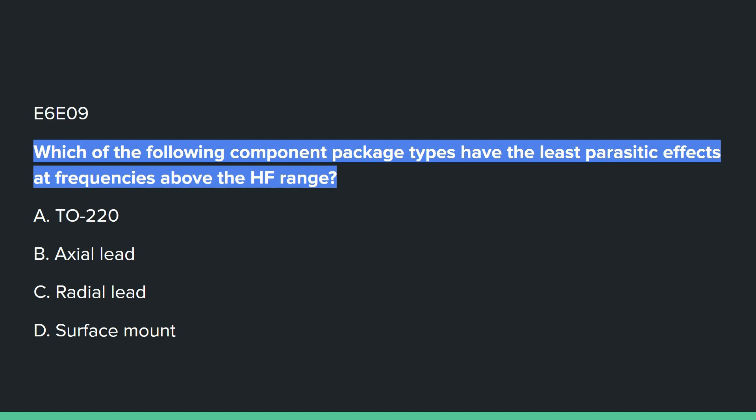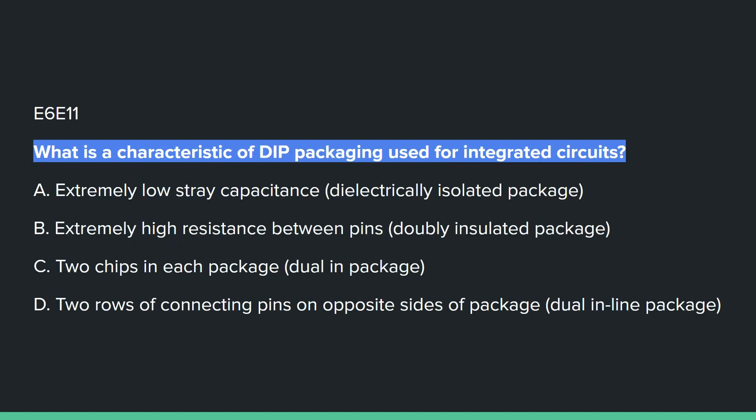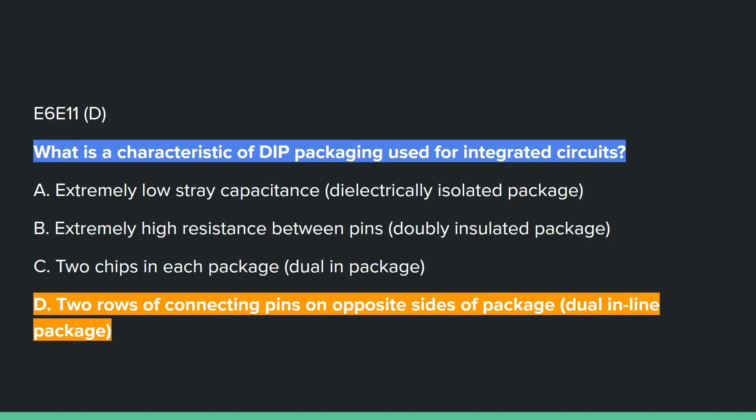E6E09: Which of the following component package types have the least parasitic effects at frequencies above the HF range? D, surface mount. E6E10: What advantage does surface mount technology offer at RF compared to using through-hole components? D, all of these choices are correct: smaller circuit area, shorter circuit board traces, and components have less parasitic inductance and capacitance. E6E11: What is a characteristic of DIP packaging used for integrated circuits? D, two rows of connecting pins on opposite sides of the package — dual inline package.